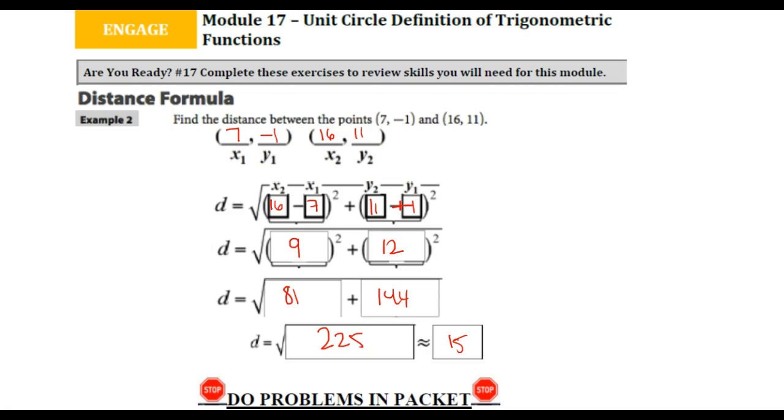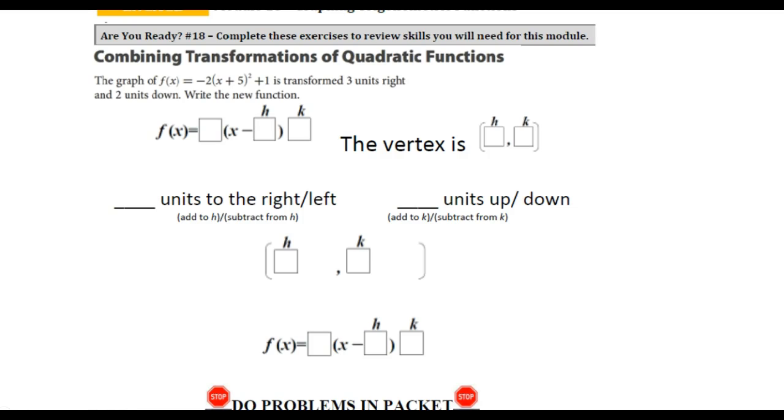All right, for the next one, Engage Are You Ready number 18. That's going over combining and transforming of quadratic functions. So let's say you're given a graph of f(x) = -2(x + 5)² + 1. Okay, so the basic format for this is: our a value, our front value, will be -2. Our h and k, which is actually coincidentally our vertex, is going to be kind of plotted in here.